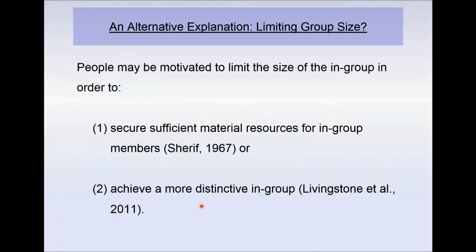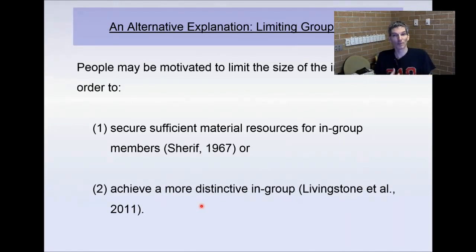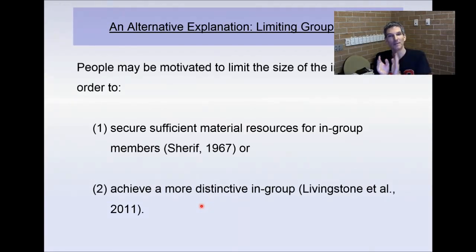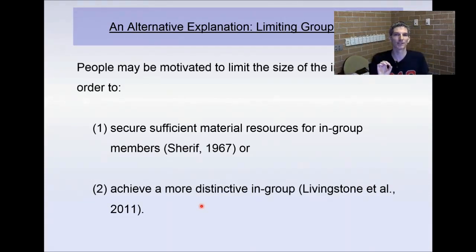The thing that's really missing is self-esteem. The whole explanation says people do this to have a positively distinct social identity because that will help them feel good about themselves. From Castano's research we know identity is involved, but the missing ingredient is the self-esteem aspect. Identity is involved, but there are other reasons why identity could be involved apart from the self-esteem angle. The question is: can we really pin this process down to self-esteem? That's what we looked at in our study.